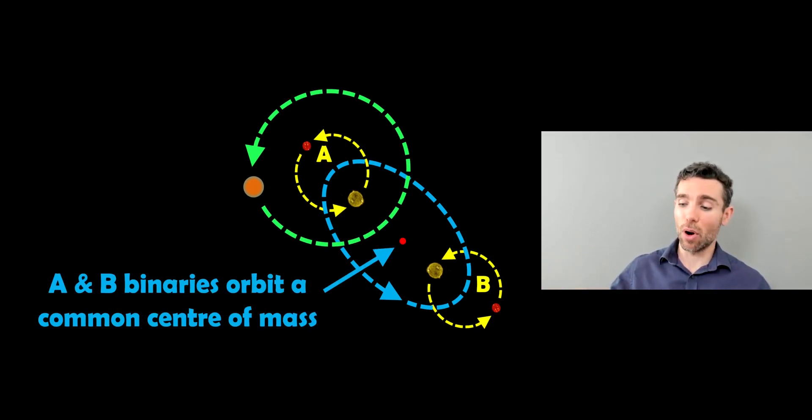And the binary A and the binary B, they are orbiting a common center of mass. So they themselves, what's their orbiting in our own little system? The two systems themselves are orbiting the common center of mass of that. So you can start to see just how complex the orbit of this planet is likely to be.